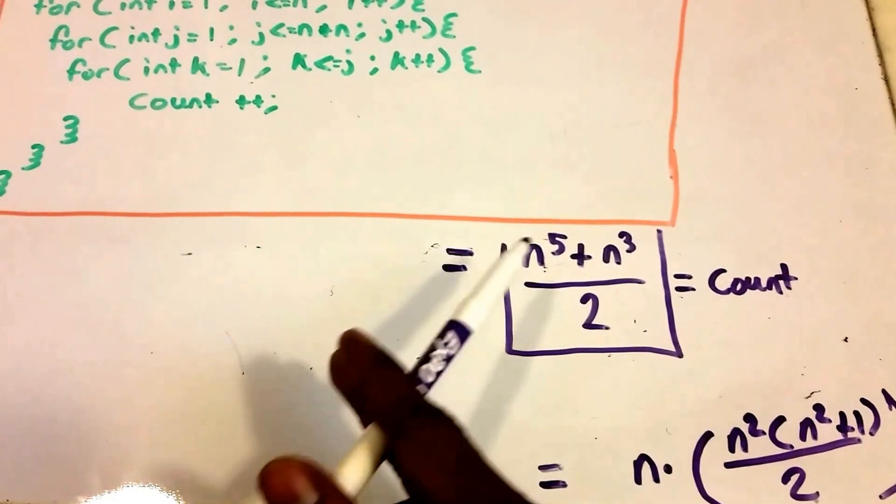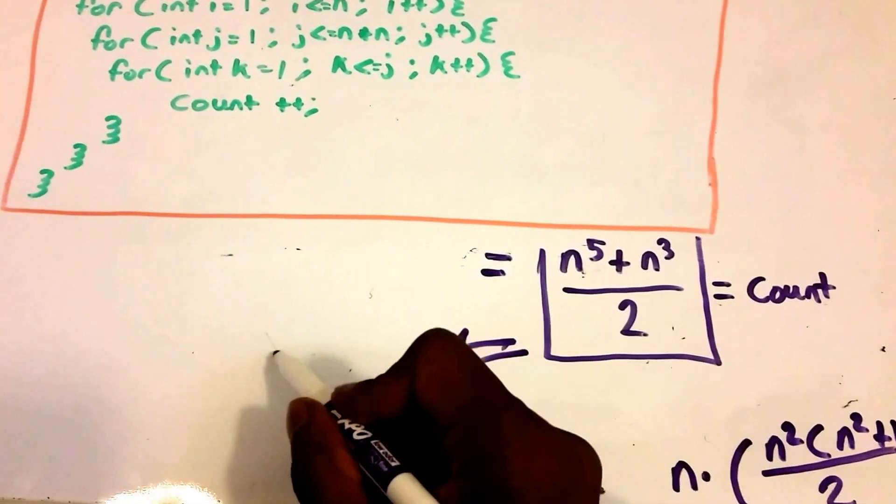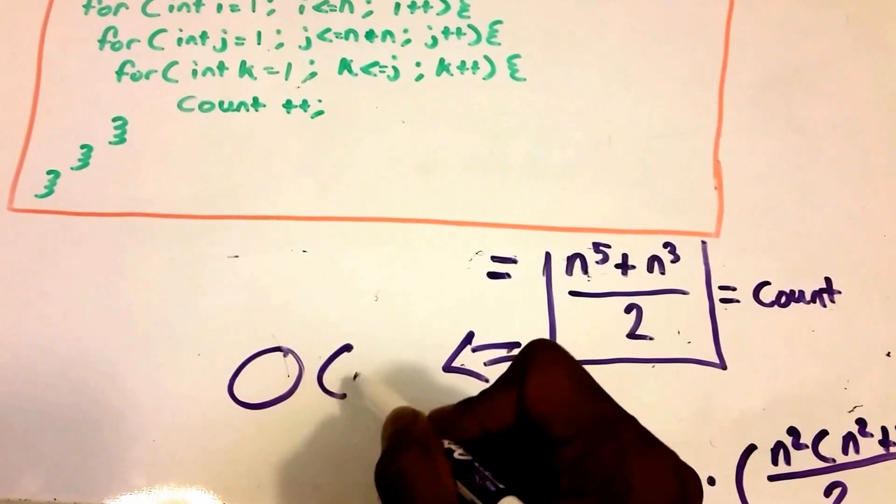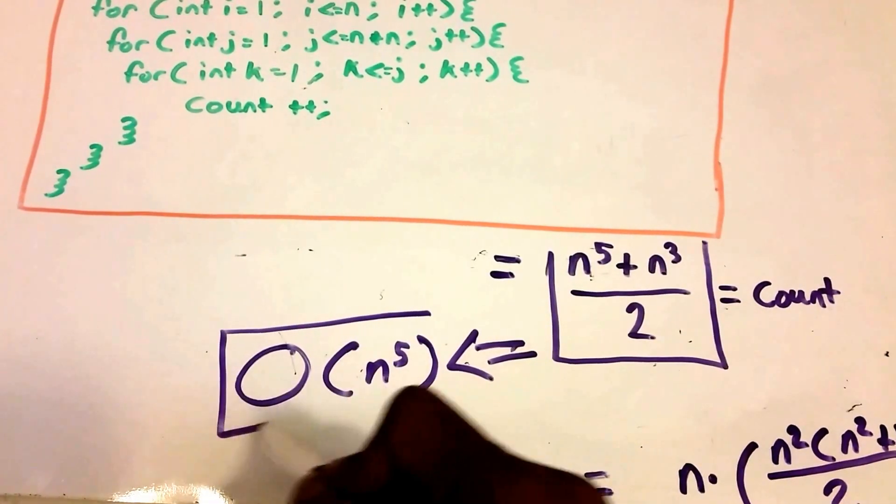Then we take the bigger exponent and that tells us that this is Big O of n to the fifth. Okay, and that's our answer.